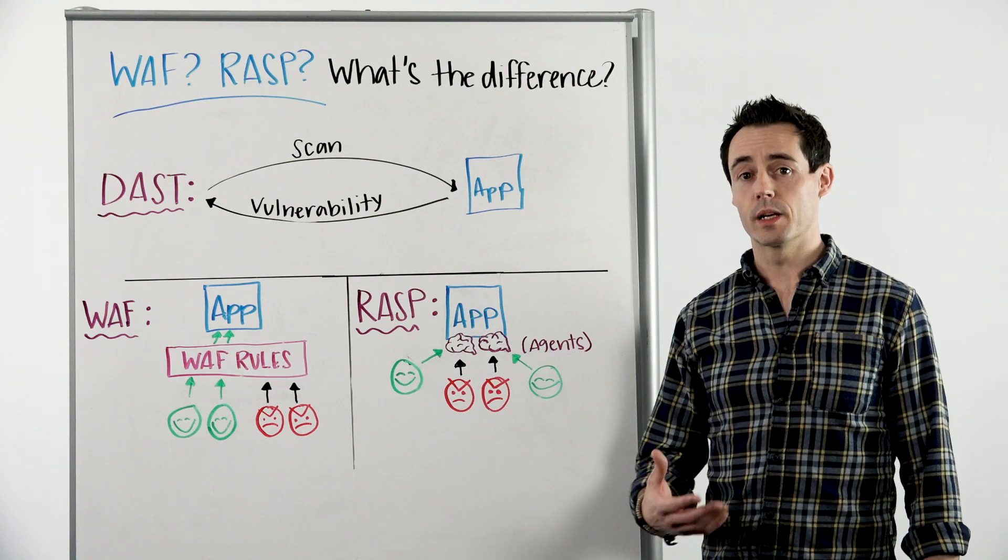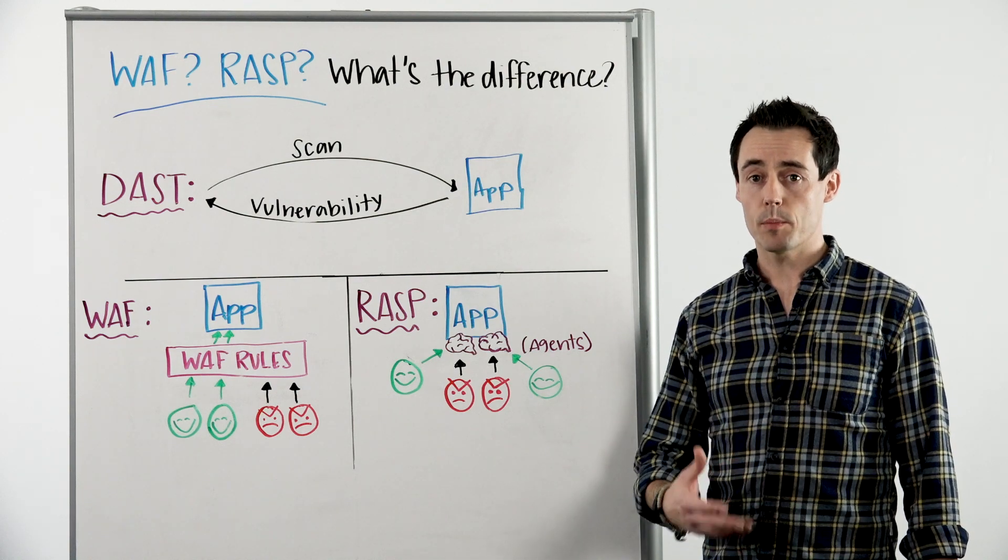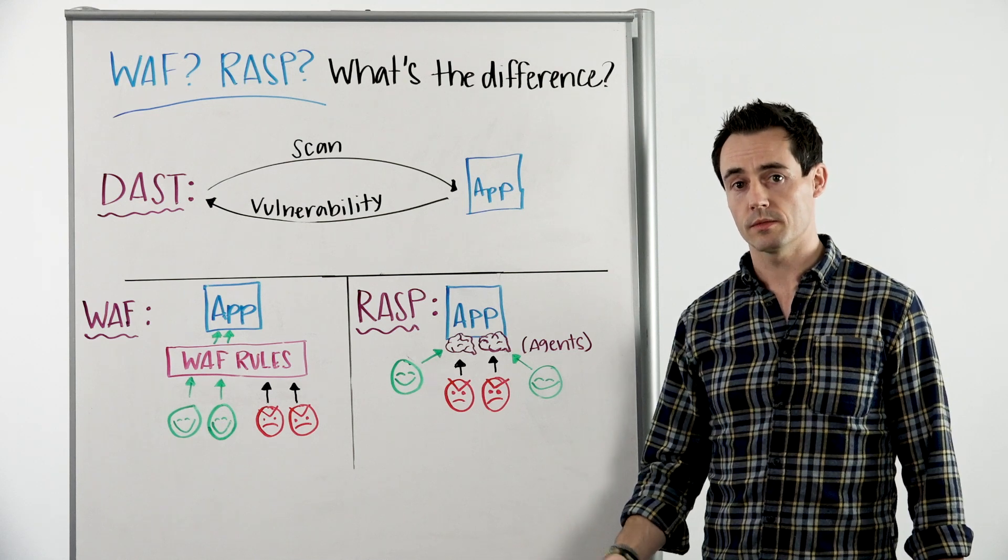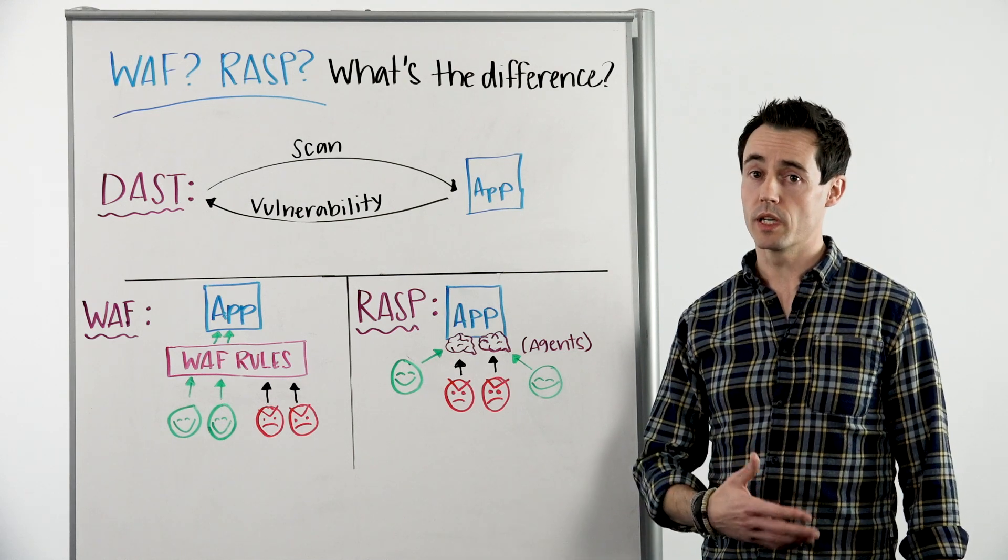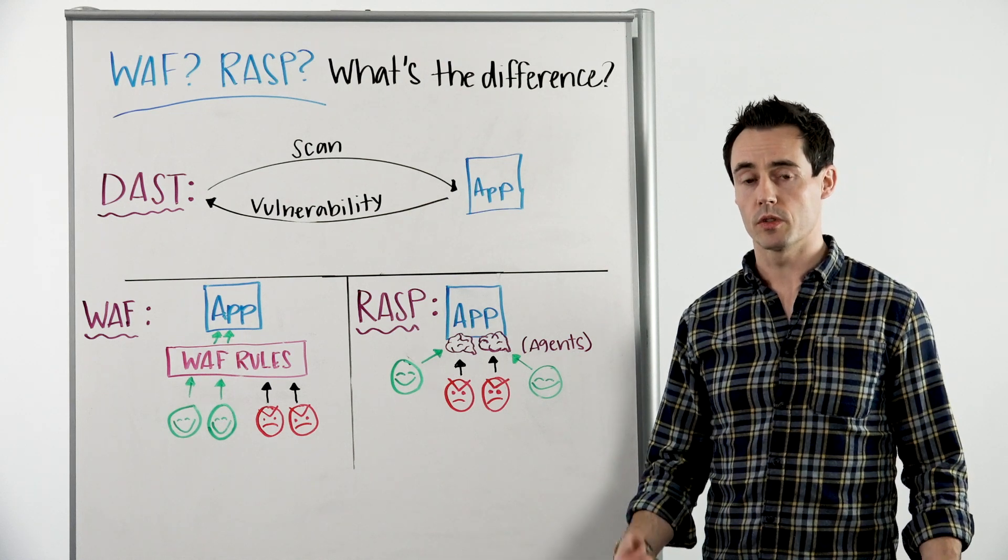This makes alerts highly relevant because they are based on application behavior instead of a prediction. There's no need to teach a security product what's bad behavior, because you know what the application should and shouldn't be doing.